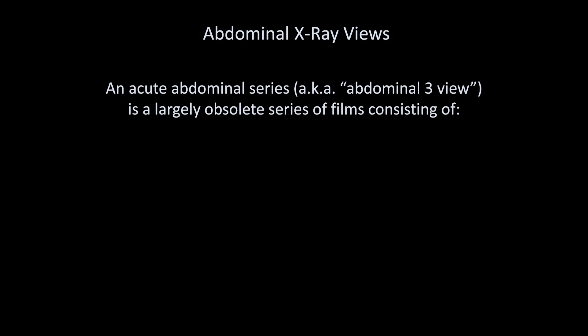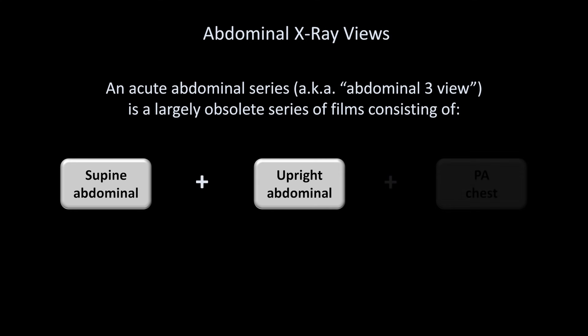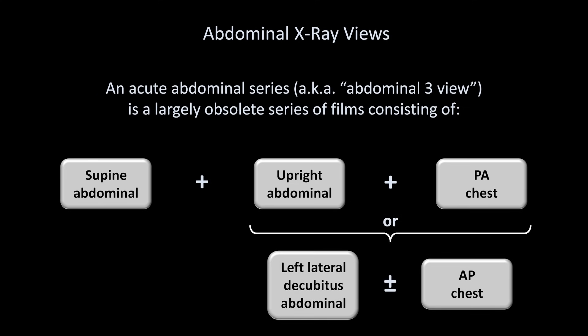You will rarely hear someone mention an abdominal x-ray series, or the so-called abdominal three-view or abdominal three-way. This is a largely obsolete series consisting of three views: the supine abdominal view, an upright abdominal view, and a PA chest view. Alternatively, for patients who cannot stand, the upright abdominal and PA chest are replaced with a left lateral decubitus film, plus or minus an AP chest view. It's been years since I've had a patient receive this specific collection of films, as CT and point-of-care ultrasound are now used in such situations.